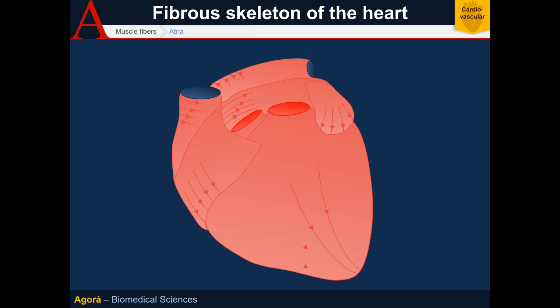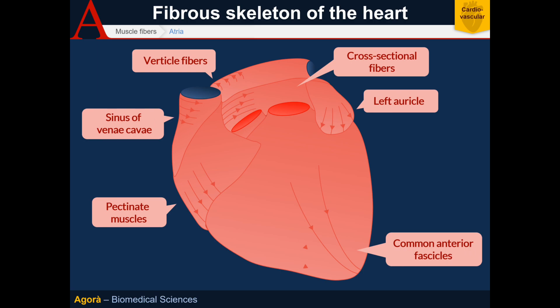Now let's talk about the muscle fibers found in the heart. The muscle fibers make up the myocardium, which functions as a functional syncytium — though not all of the myocardium reacts as one unit; some areas behave in very similar ways. These groupings are called the muscle fibers of the heart. Vertical fascicles that surround the pulmonary veins can be seen before the atria.